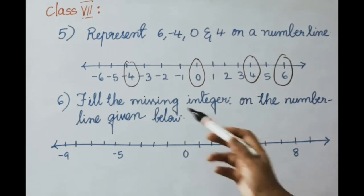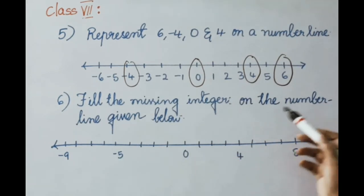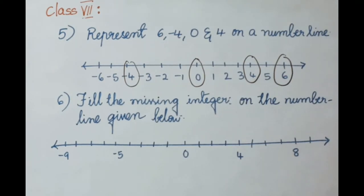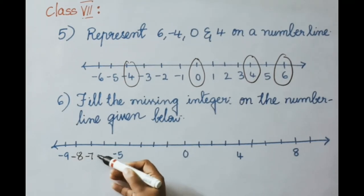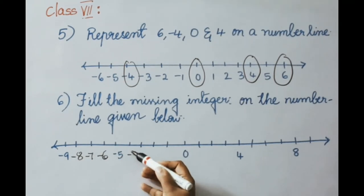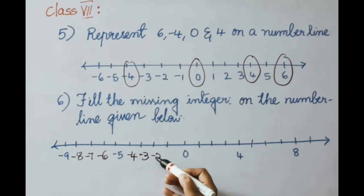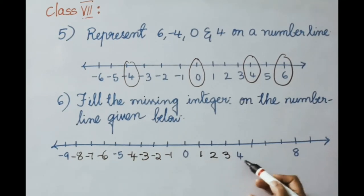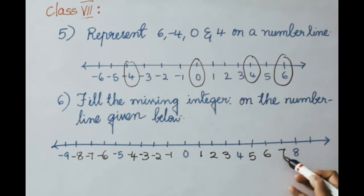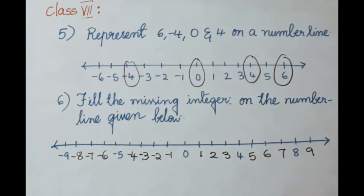See the sixth question. Fill the missing integers on the number line given below. They have marked minus 9, minus 5, 0, 4, and 8. We must fill in the missing integers: before minus 9, then minus 8, minus 7, minus 6, minus 4, minus 3, minus 2, minus 1, 0 — after 0: 1, 2, 3, then 4 is already given, then 5, 6, 7, then 8 is given, and finally 9. These are the missing integers filled in.